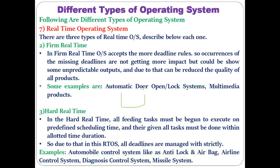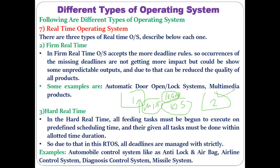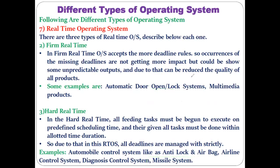In missile systems, if a war is happening between two countries and country one wants to launch a missile at 10 AM, that missile must be launched at exactly 10 AM. If there is a delay and it launches at 10:05 AM instead, the other country might launch their missiles first and strike. That is why missile systems use the hard real-time operating system — the missile must be launched within the specified time only. That covers the real-time operating system, its types, and different examples.